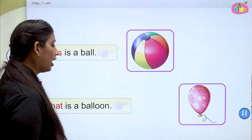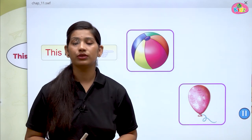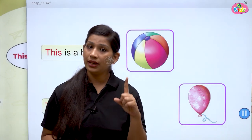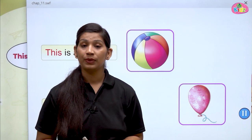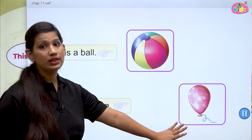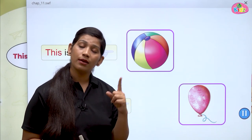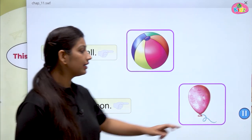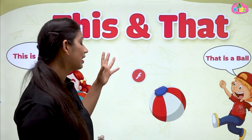Here you can see a picture of ball and a picture of balloon. Both pictures show only one object each. Koi bhi cheez jab one in number hoti hai tab woh this or that hoti hai. Ball ek hi hai aur paas mein bhi hai, toh hum bolenge: this is a ball. But the balloon is far away — door hai — toh hum bolenge: that is a balloon. I hope students you can now clearly understand the difference between this and that.